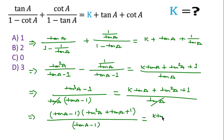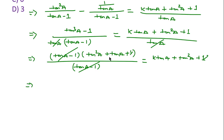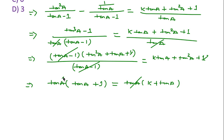We can write k tan a plus tan squared a plus 1. This term and this term get cancelled, and here this one and this one also get cancelled. After that, taking tan a common from these two terms we can write tan a plus 1, and taking tan a common from those two terms we get tan a times k plus tan a. The tan a factors cancel, and after that this tan a also cancels. So we get only k equal to 1. Therefore k equal to 1 is the required answer.